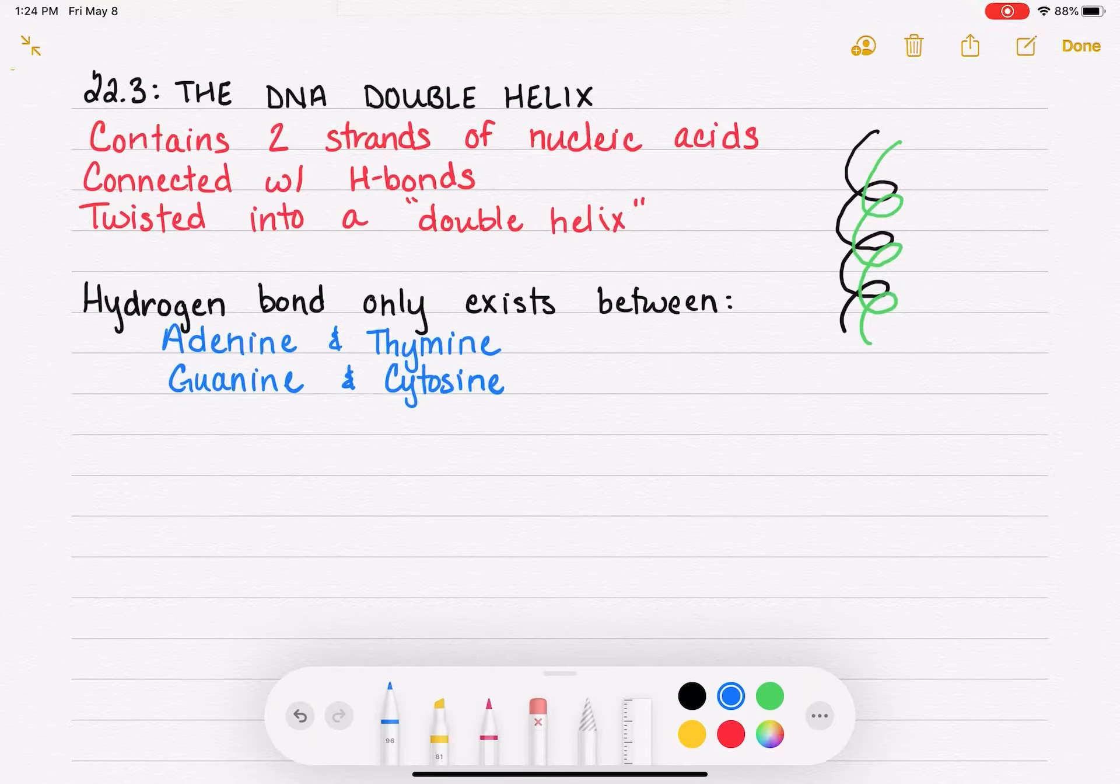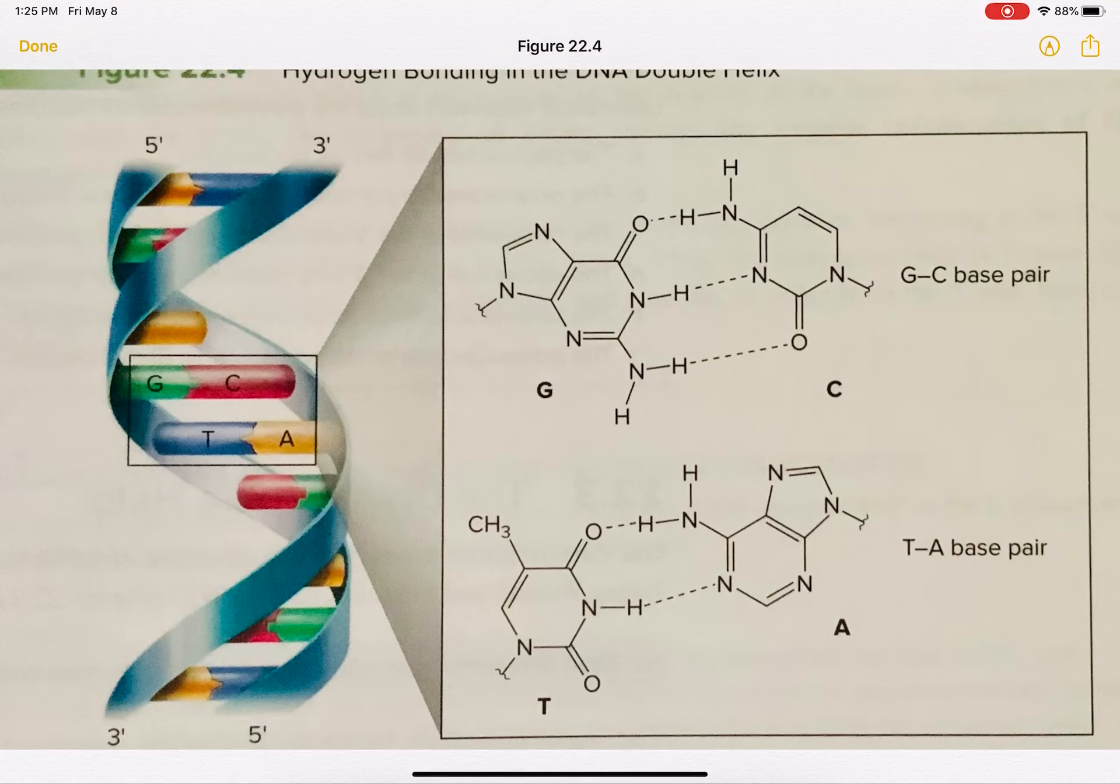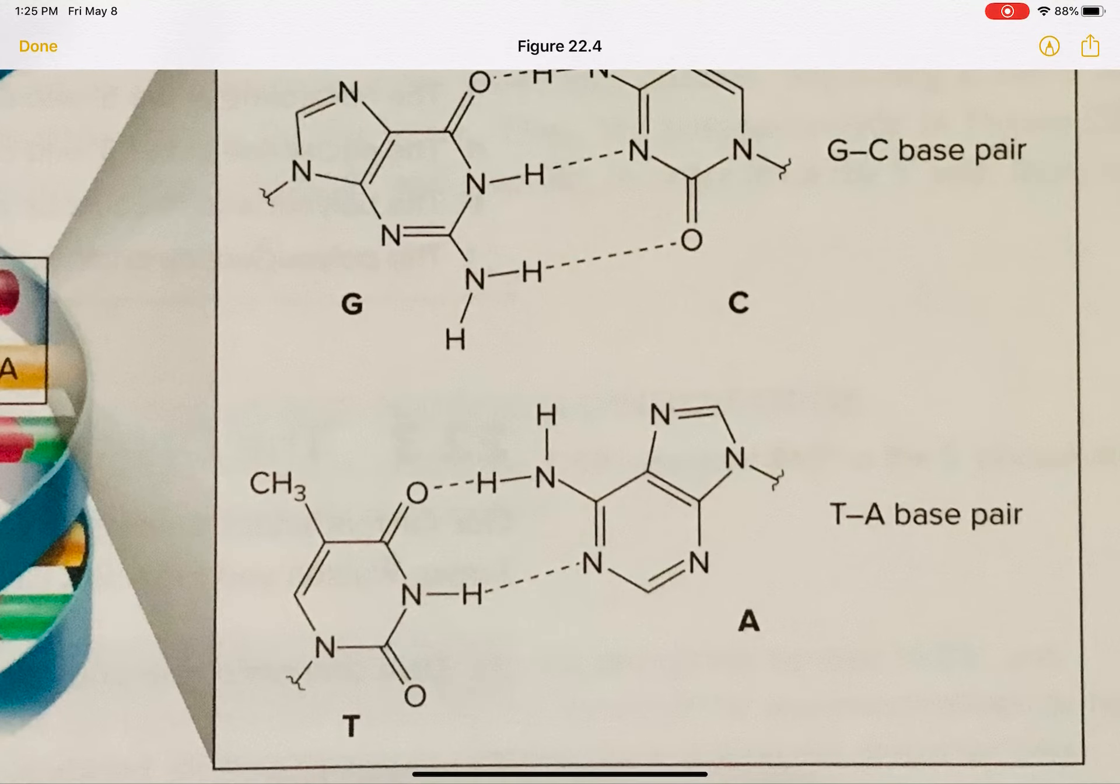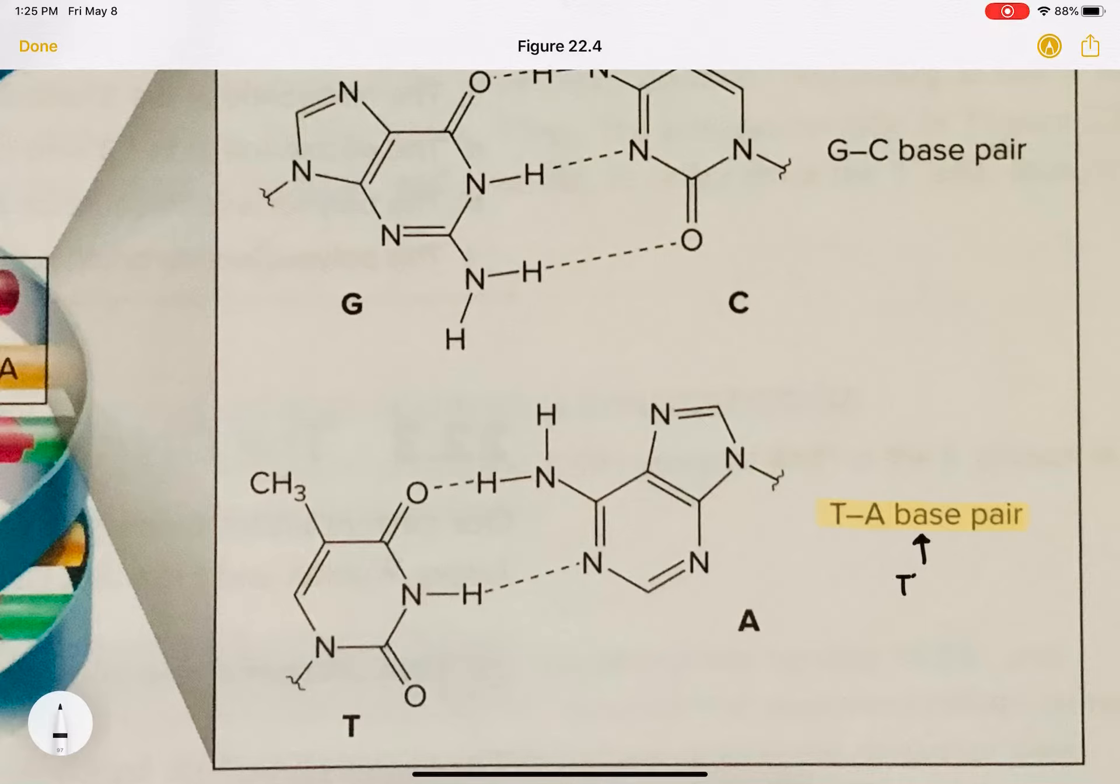So to be clear on that, adenine can only hydrogen bond to thymine. It can't hydrogen bond to guanine or cytosine. When adenine and thymine connect, I'm going to look at a picture from your textbook, figure 22.4. Here is a representation of adenine and thymine connecting. And we're calling this a base pair because it contains the bases. Base is referring to thymine and adenine.